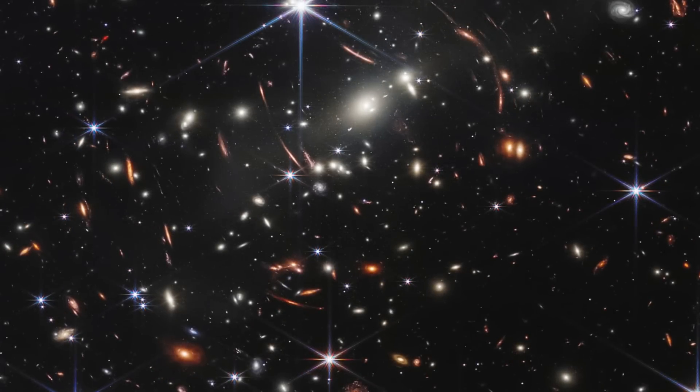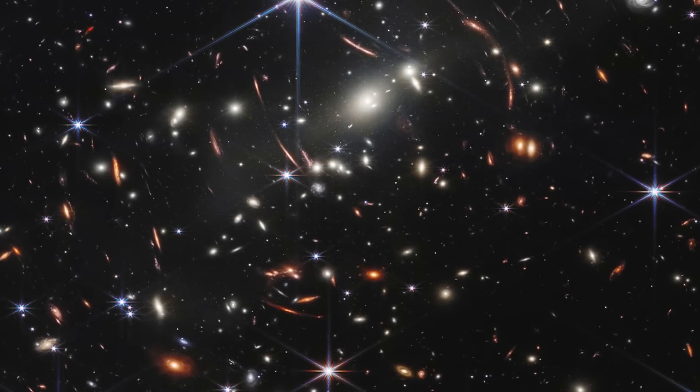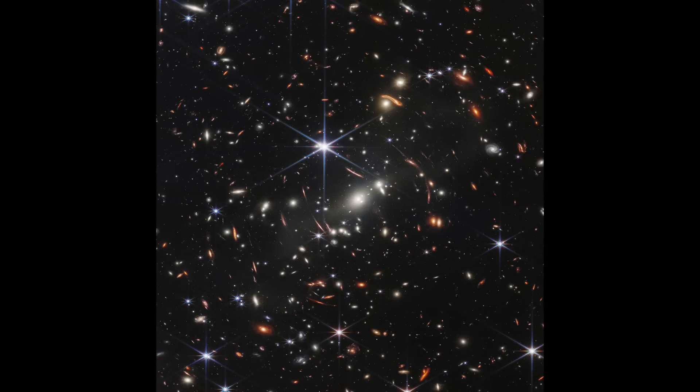Perhaps scientists might use this information to answer the question of why some galaxies cease star production entirely. The James Webb Telescope has captured 48 different galaxies at once using its near-infrared spectrograph.